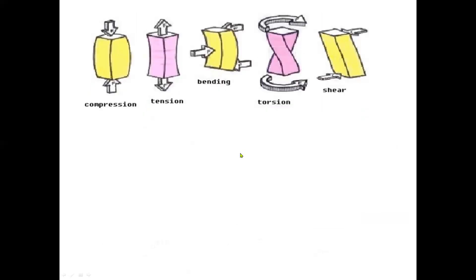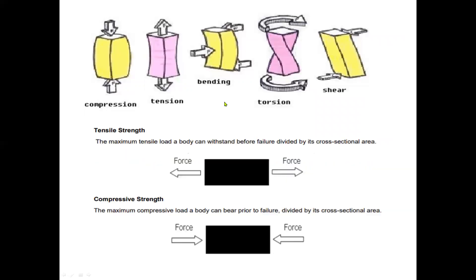We have the different kinds of loads: compression load, tension load, bending load, torsion load, and shear load. Speaking of tensile strength, the maximum tensile load a body can withstand before failure divided by its cross-sectional area. Compressive strength: the maximum compressive load a body can bear prior to failure divided by its cross-sectional area. Torsional strength is the maximum amount of torsional stress a body can withstand before it fails divided by cross-sectional area.